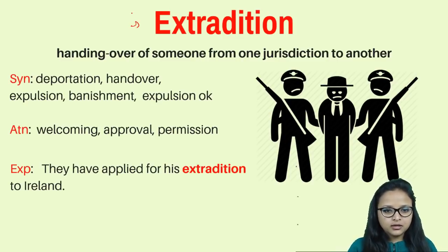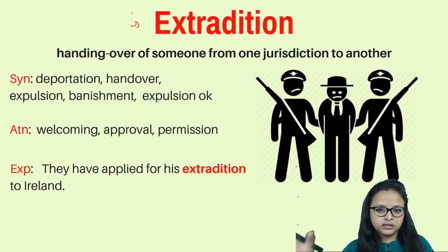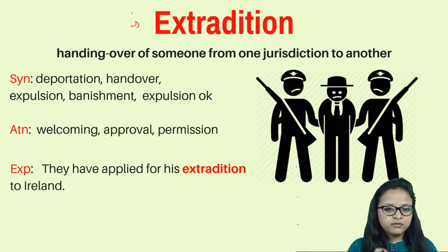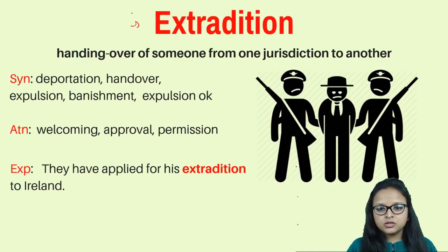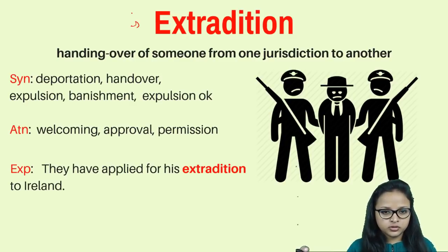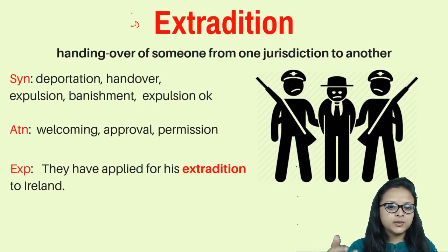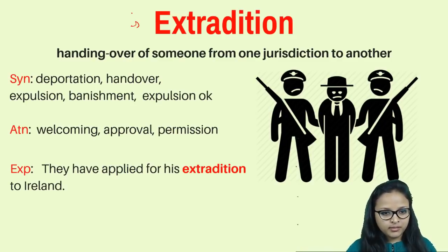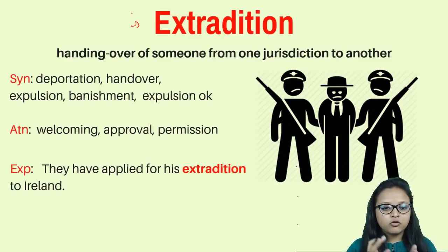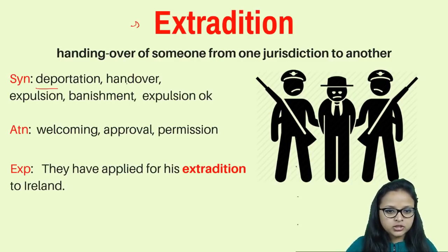Extradition is handing over someone from one jurisdiction to another. For example, Vijay Mallya is declared a fugitive economic offender and he is right now in Malaysia — I am just supposing. So the Malaysian government is going to hand him over to the Indian government — that process is called extradition. It means the Malaysian government is deporting Vijay Mallya to India to settle all his cases. It is a kind of handing over a person to another jurisdiction because that person is an offender in a legal manner.